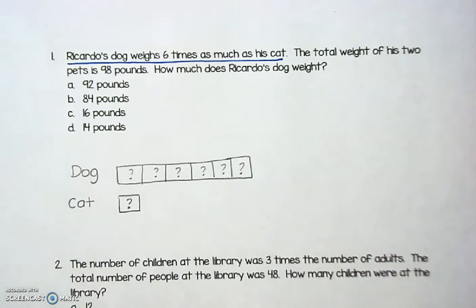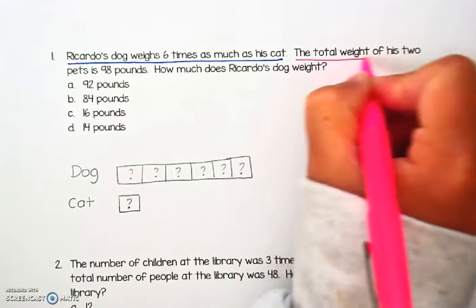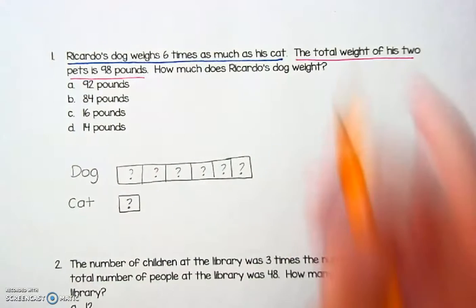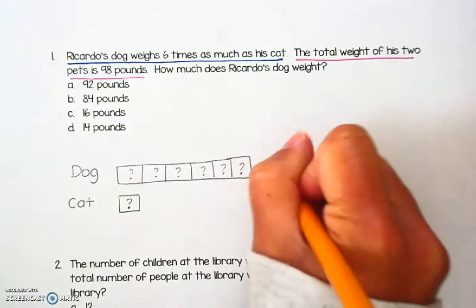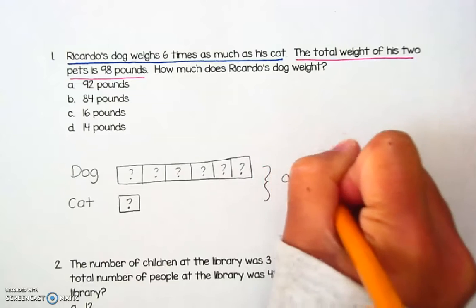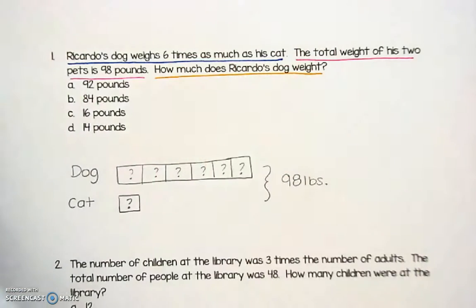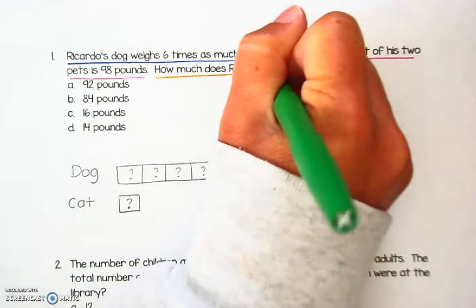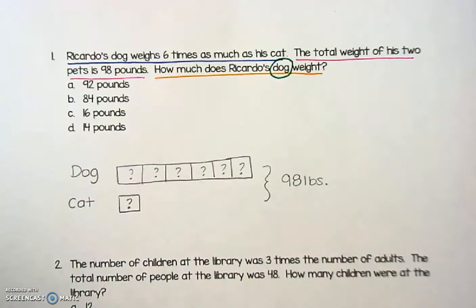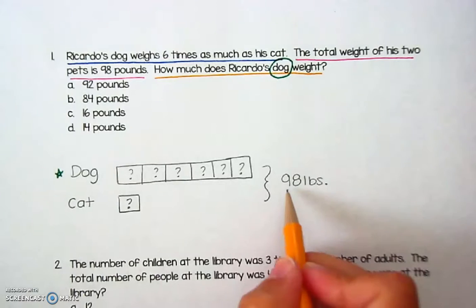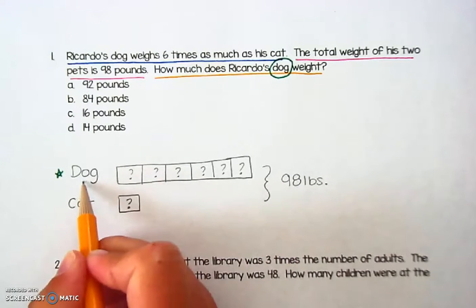Let's move on to the second sentence and see what else helps me solve the problem. It says the total weight of his two pets is 98 pounds. So I know that both of these animals together weigh 98 pounds. Finally, it asks how much does Ricardo's dog weigh? It's important to pay attention, especially with a multiple choice question, that I want to know the weight of the dog. So I might put a little star next to that just to remind me to answer based on the weight of the dog. So now I have this picture that can help me solve the problem — these 98 pounds are shared between the dog and the cat.